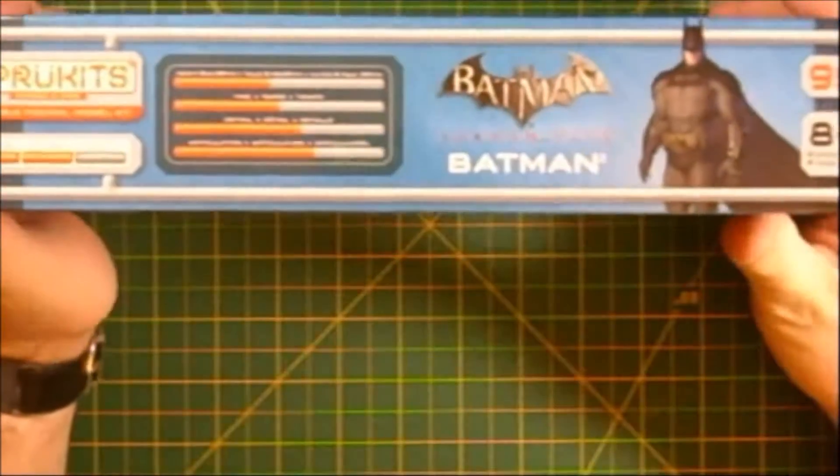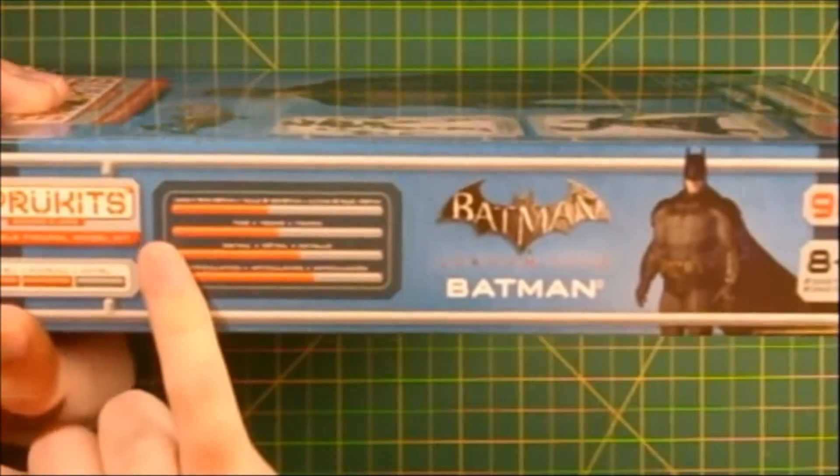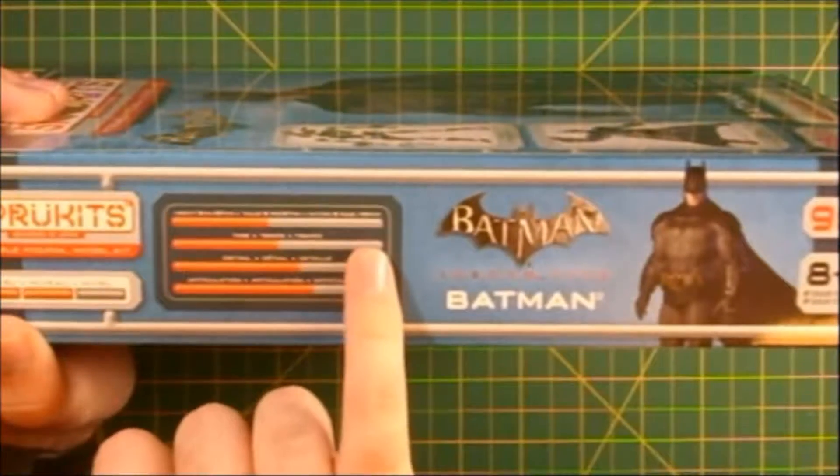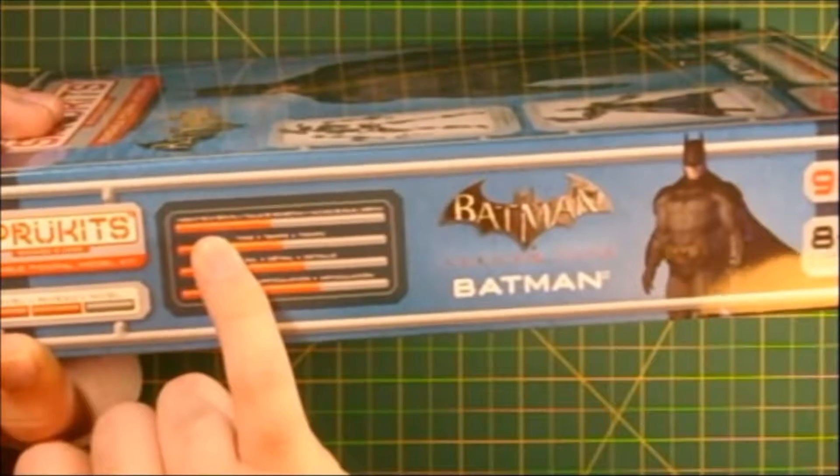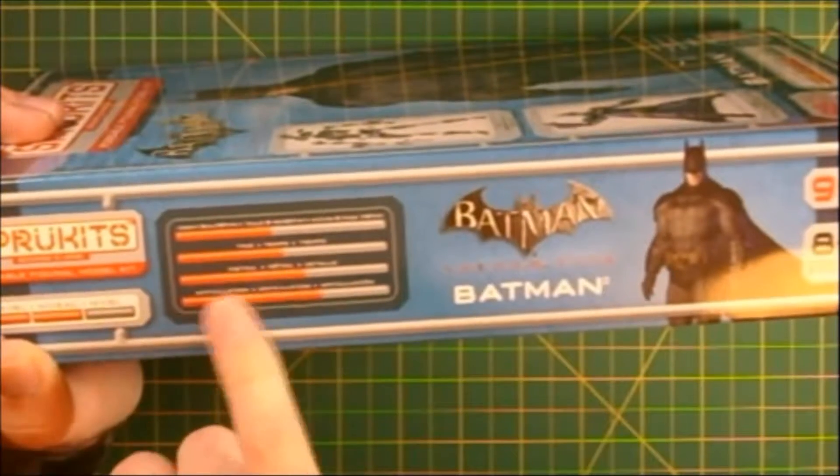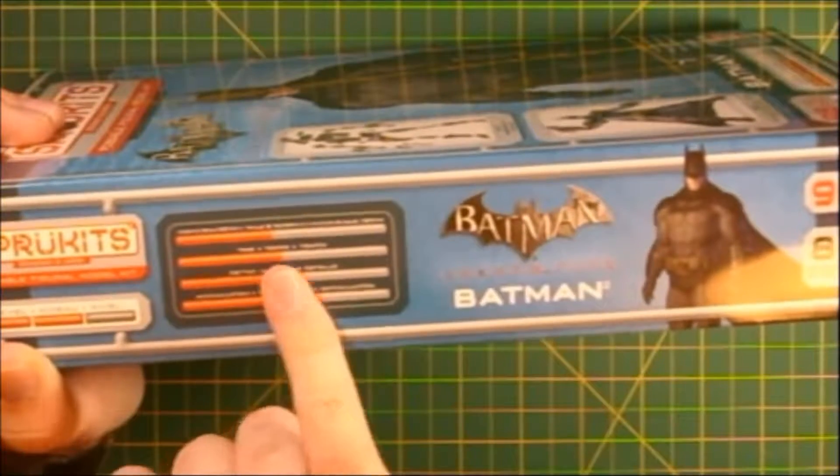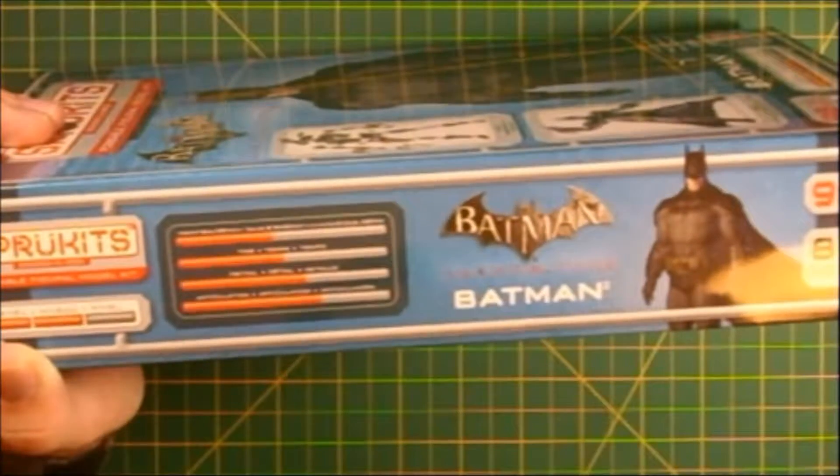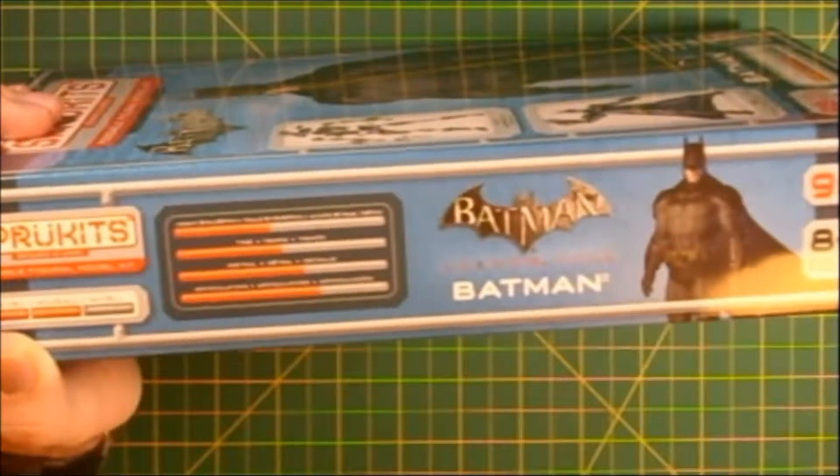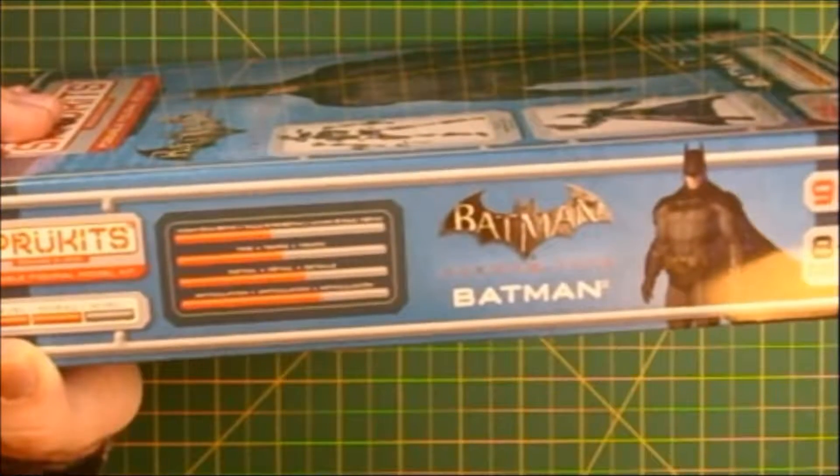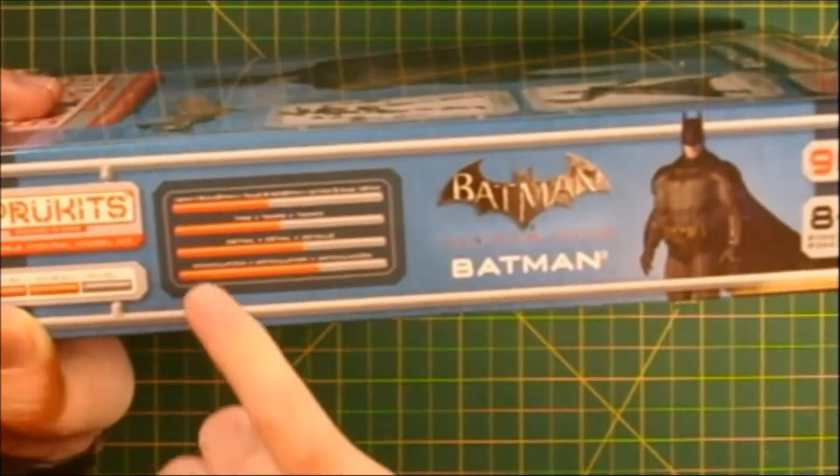On the other side, we've got some more details about the model itself, telling us it's going to be about five inches tall when it's finished. The second bar right here says time, but it doesn't give any indication as to any kind of approximation, just kind of by comparison to other kits in the Spru Kits line.